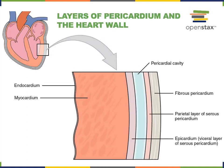The heart is found protected within a pericardial sac, also just known as the pericardium. The pericardium has three layers.